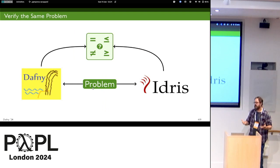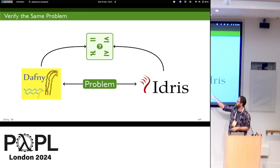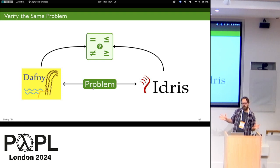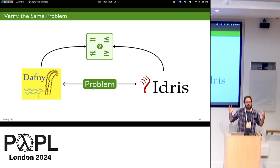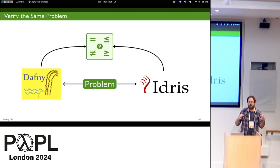So how could I compare them? I needed a co-conspirator, and James was that co-conspirator — he knew more Daphne than I did and I know more Idris than he does. We thought: a very naive, unsystematic way to compare two languages is to select the same problem, verify it in both languages, and then compare what comes out. It's a litmus test — can we tackle the same problem and verify it, and see what emerges?